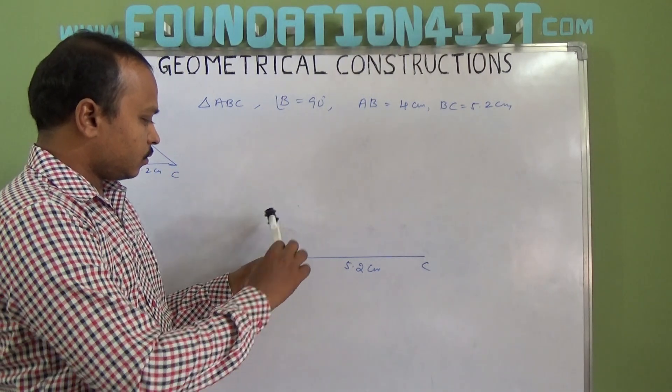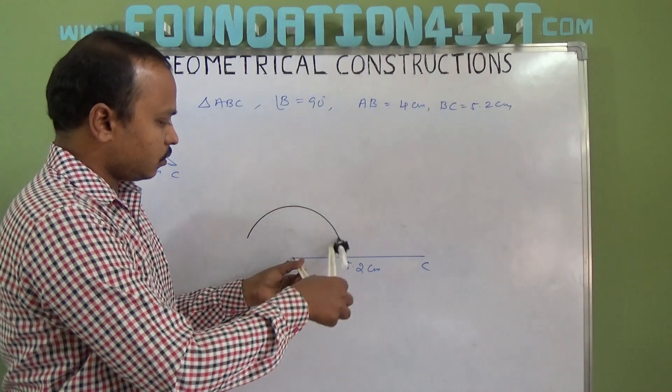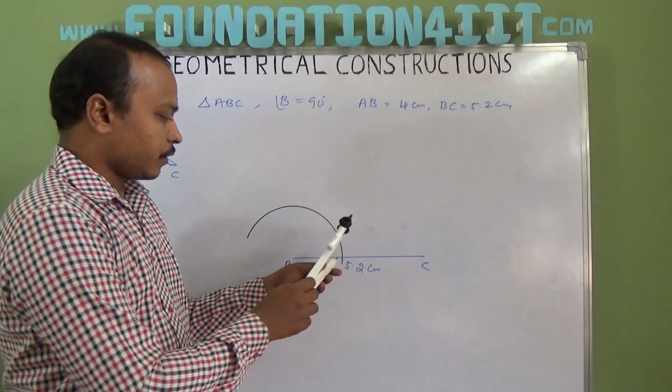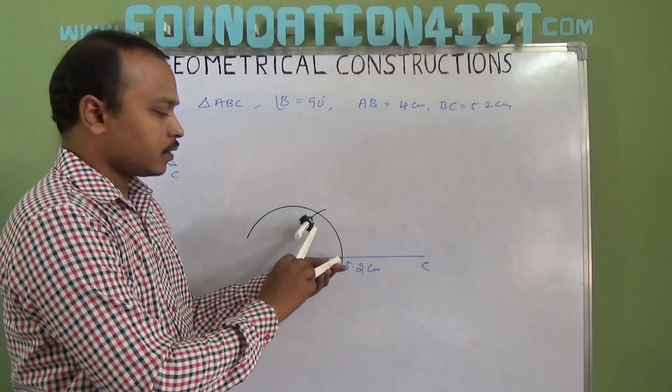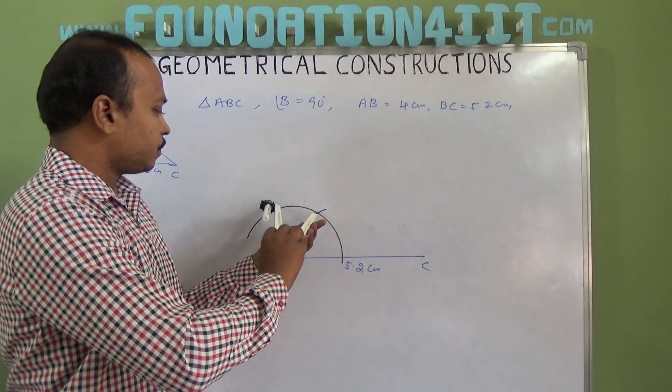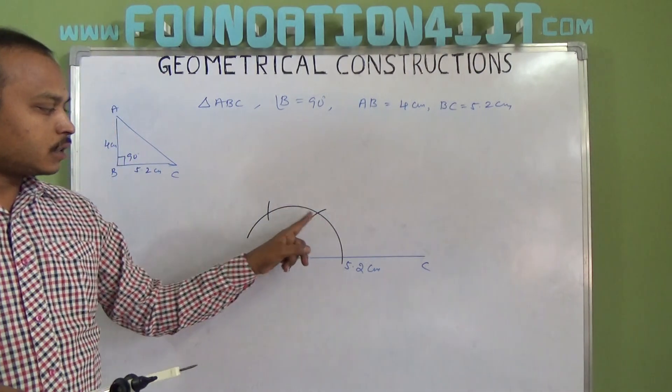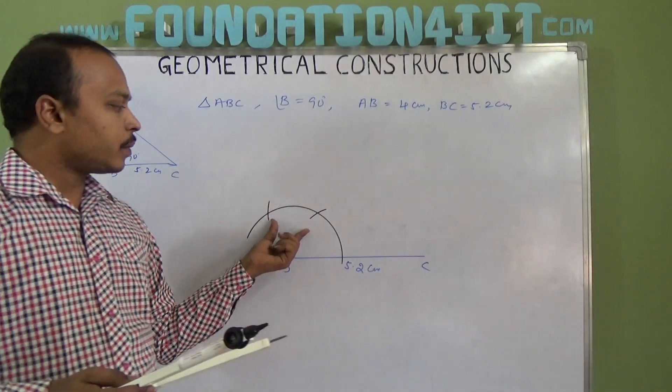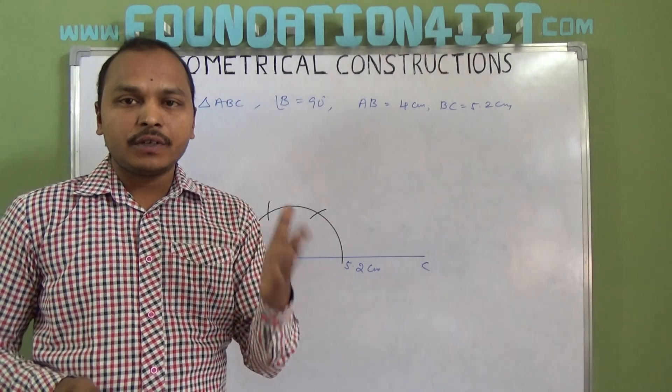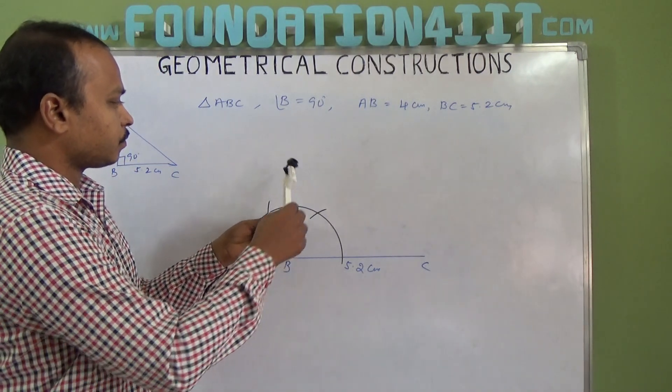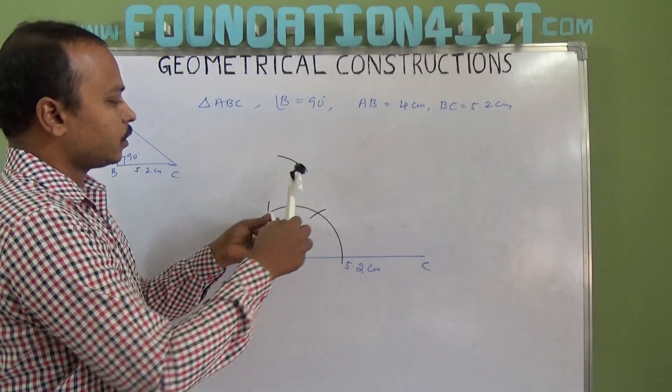Without changing the radius, cut first at 60 degrees, then at 120 degrees. Draw arcs at both points. If you bisect these two arcs at 60 and 120, you will get 90 degrees, because 90 is between 60 and 120. With the same radius from this point, also draw an arc.